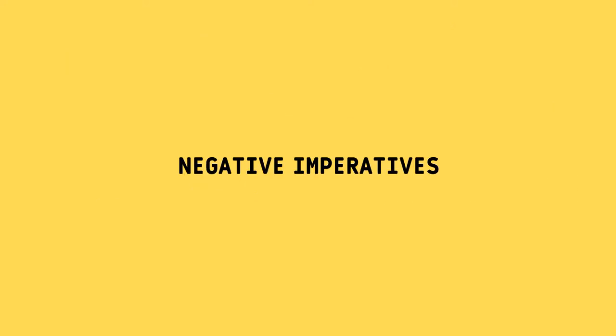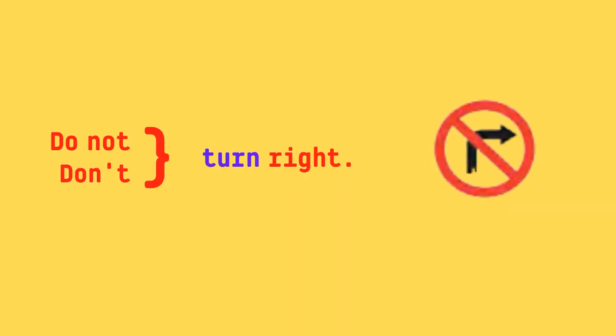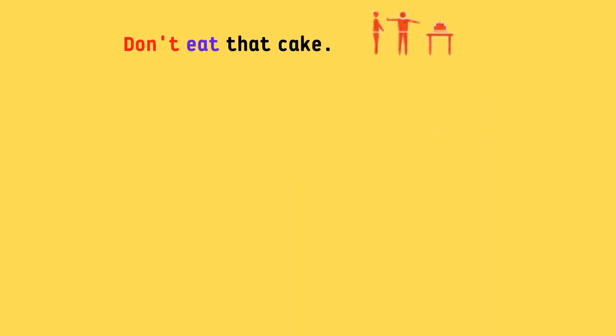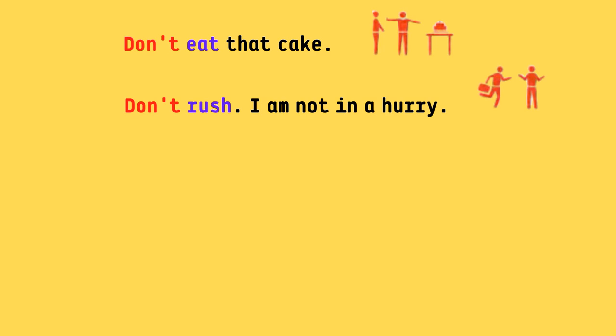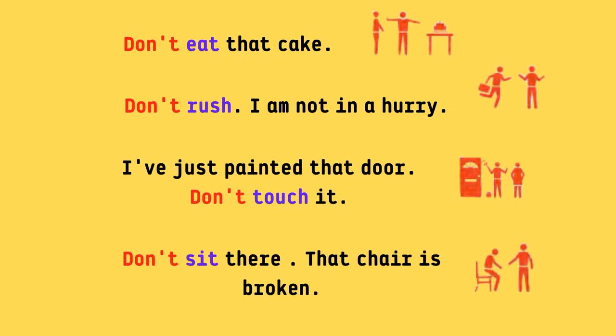Negative imperatives. Do not, or don't, can be added before the verb to make an imperative negative. Do not turn right. Don't turn right. Further examples: Don't eat that cake. Don't rush, I am not in a hurry. I've just painted that door. Don't touch it. Don't sit there — that chair is broken.